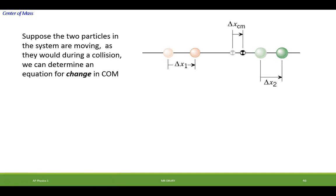Suppose the two particles in the system are moving, as they would during a collision. Can we determine an equation for a change in center of mass? Well, certainly. We could take our original equation. Instead of having x's in it, we'll have delta x's. So that would be the change in center of mass.